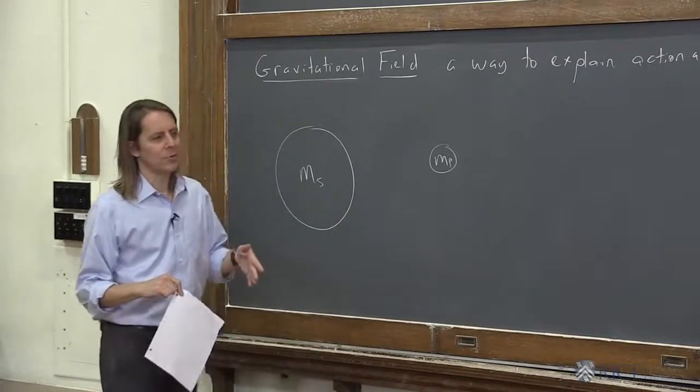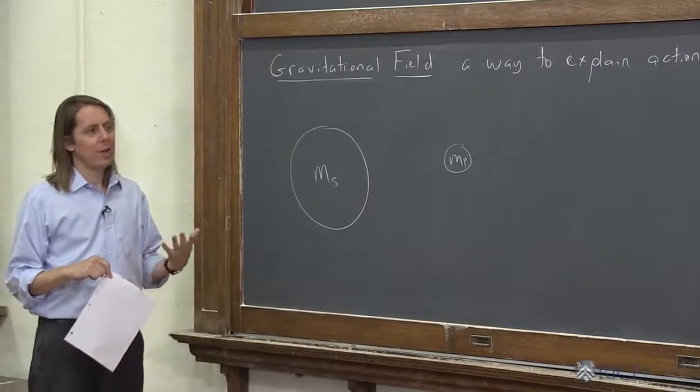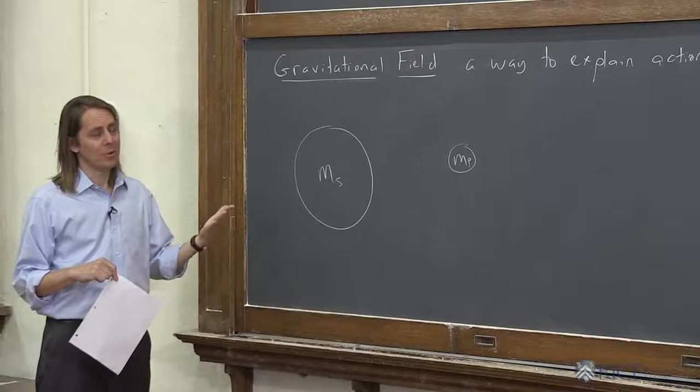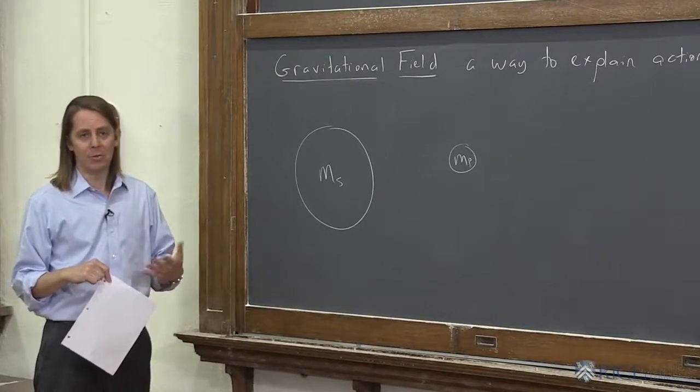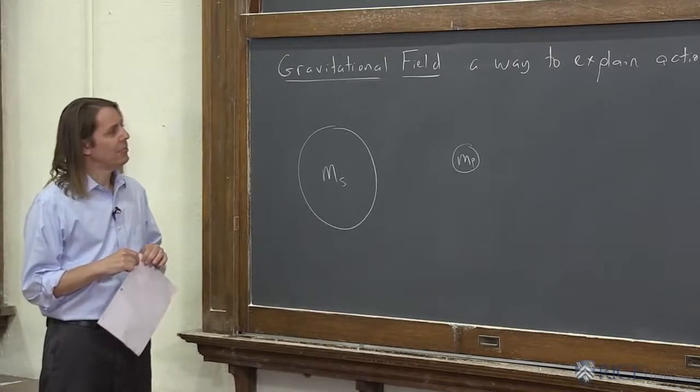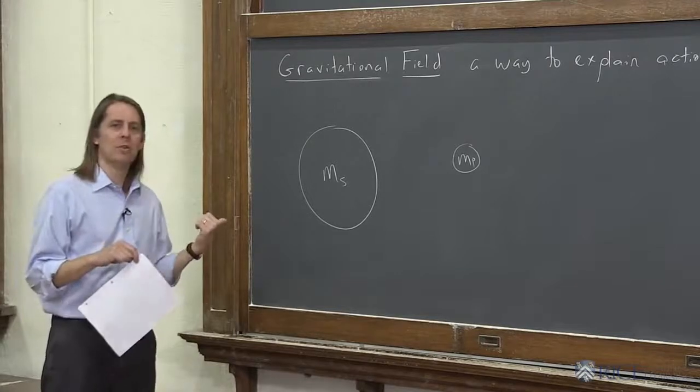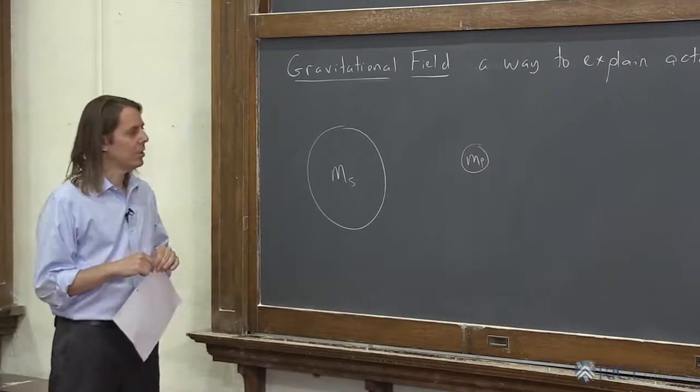This came much later when we get into electric fields and magnetic fields and electromagnetic theory. It was Faraday who came up with the concept, and Maxwell who really wrote it in a formalism that was really perfect. So Faraday and Maxwell, a few hundred years later, came up with the field concept. But now we go back and we use it to explain how gravitational forces work as well.